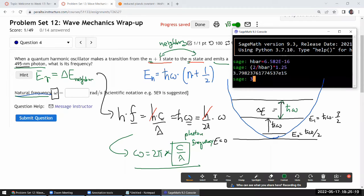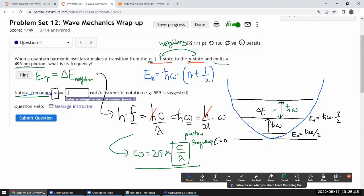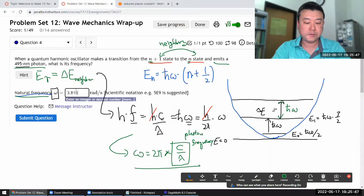So I need c which is about 3 times 10 to the power of 8 divided by that wavelength 495 times 10 to the power of minus 9 nanometers times 2 times pi. Okay you gotta put this through numerical. Yeah the decimal approximation function. So I get 3.81 times 10 to the power of 15. Yeah that's it.